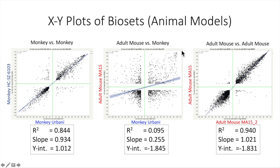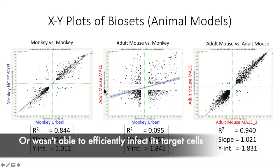We do find that the highest genes expressed in the monkey tend to be the same as the adult mouse, but not a lot of overall correlation. What is interesting is when I do this comparison using a young mouse instead of the adult, the correlation is much better — I believe the R value was 0.223. This suggests that the strain of virus used to infect the monkey isn't as strong as the one used to infect the mouse.